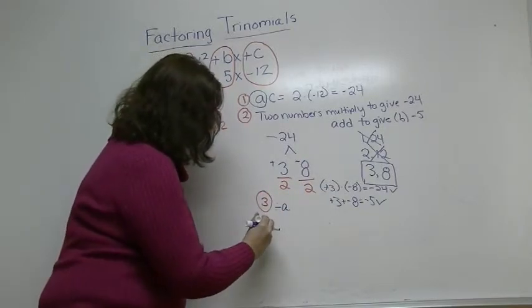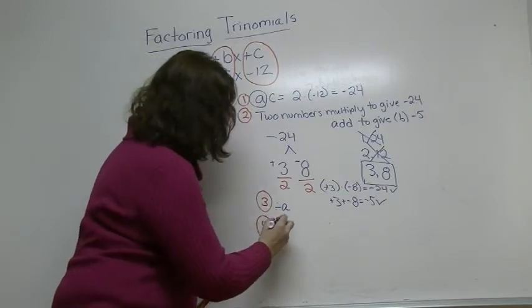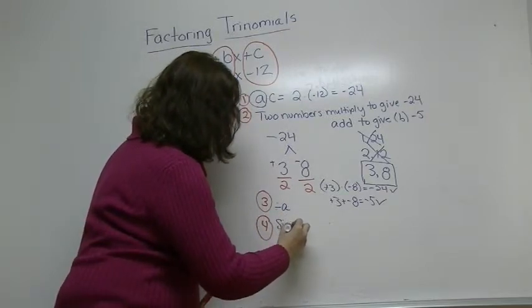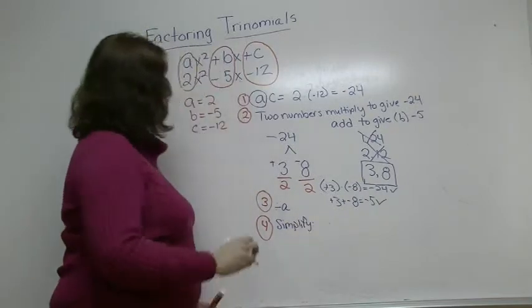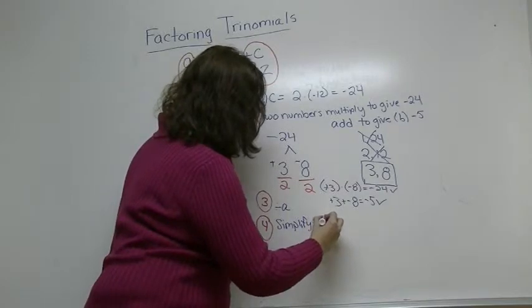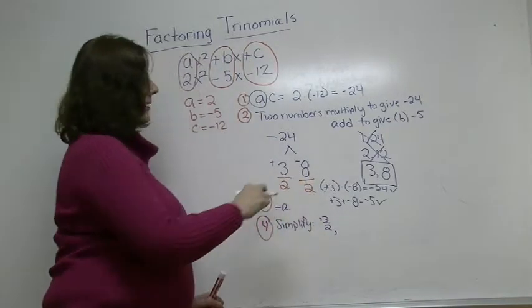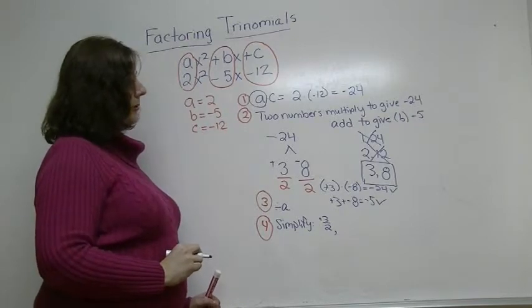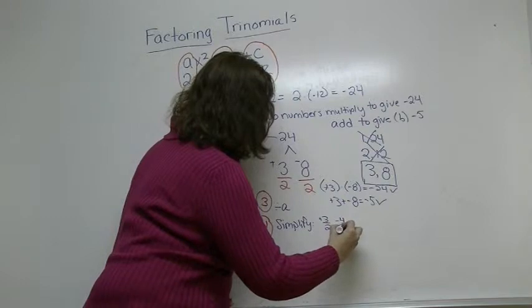Step 4 is to simplify. And 3 over 2 does not reduce. And negative 8 over 2 reduces to negative 4 over 1.